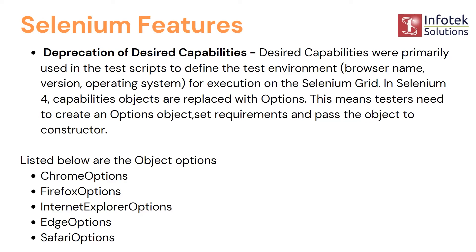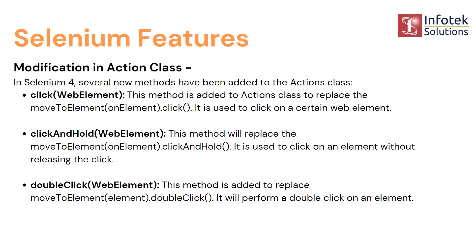There are specific Options classes for each browser: ChromeOptions, FirefoxOptions, InternetExplorerOptions, EdgeOptions, and SafariOptions. These options help add facilities that cannot be added through packages or jar files. This is a very important feature and you will see the best uses of it when you come across it. So Desired Capabilities has been upgraded to browser-specific Options classes — one of the most important new features.